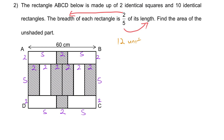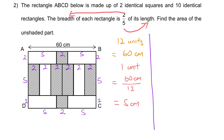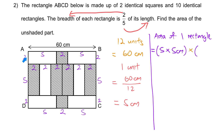Therefore 12 units equals 60 cm, so 1 unit equals 60 cm divided by 12, which gives us 5 cm. From here we can figure out the actual dimensions of one rectangle. The length is 5 units, so 5 times 5 cm. We multiply it by the breadth, which is 2 units, so 2 times 5 cm.